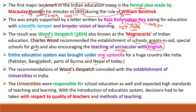The recommendations of Wood's Dispatch coincided with the establishment of universities in India. The university's responsibility was to look after school education and maintain high standards of teaching and learning, with the ability to give guidelines to schools and colleges. With the introduction of the education system, decisions had to be taken with respect to the quality of teachers — their language and teaching methods also needed to be improved.